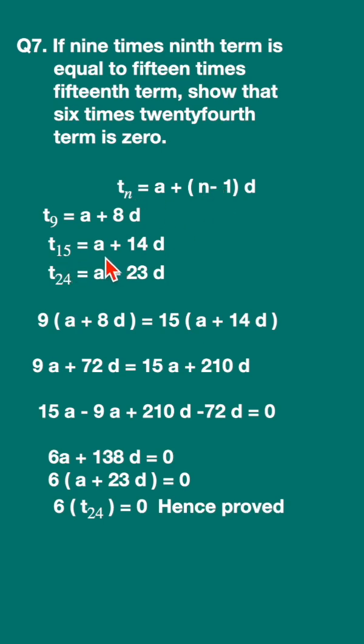Then let us find out the 24th term. t24 equals a plus 24 minus 1, that is 23d. So we got the 9th term, 15th term, and 24th term.